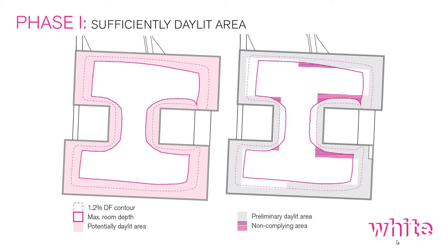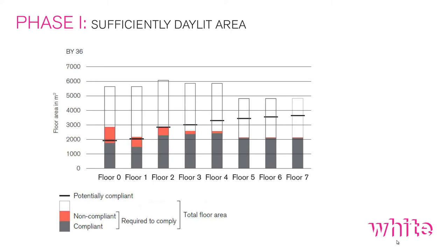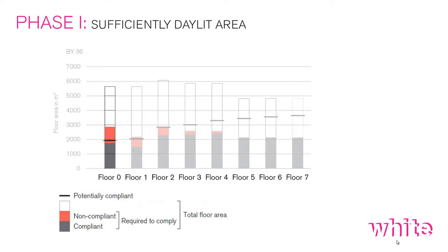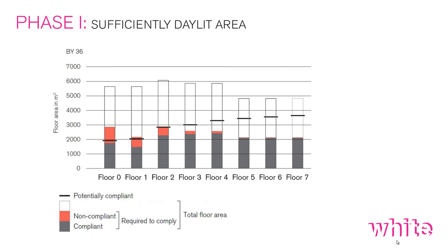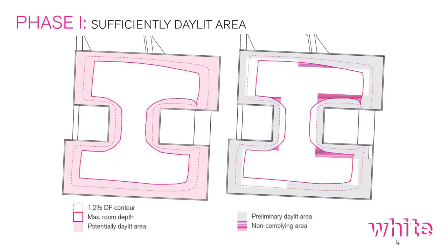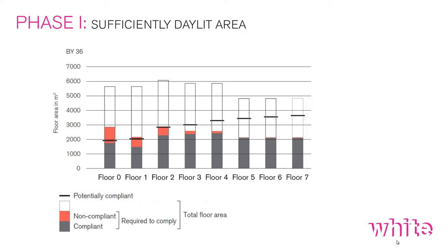There is a mismatch between the two images — the non-compliant areas that do not receive sufficient daylight and will need to be relocated in other areas of the floor plan. This graph summarizes the results of all floor plans in the hospital building. For each floor plan, you have the maximum floor area, the areas required to comply divided into compliant and non-compliant portions (highlighted in orange), and a straight line representing the potentially compliant area — the same one simulated with the pink area.